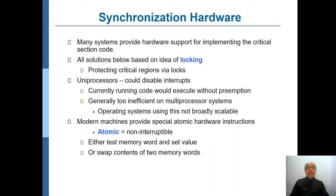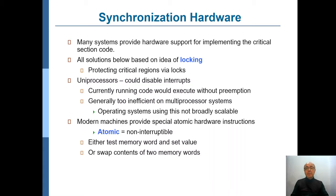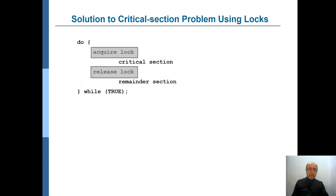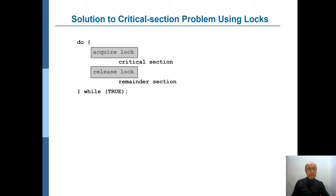Another option is, if you have two such words, doing a swap in an atomic manner. Remember that a swap operation cannot normally be done in one instruction, but this specific type of swap is done atomically. So if you have such mechanisms for putting locks and releasing them, your program turns into a small code: acquire the lock, go into the critical section, release the lock, then execute the remainder of your code. Whenever you need to go into a critical section again, acquire the lock, do the critical section, release the lock.